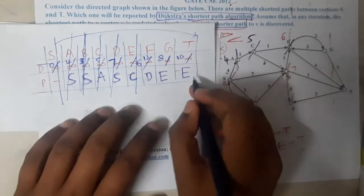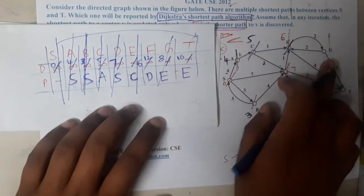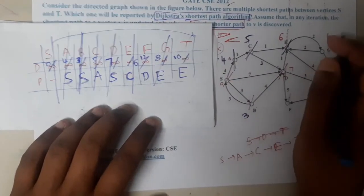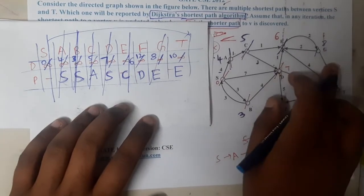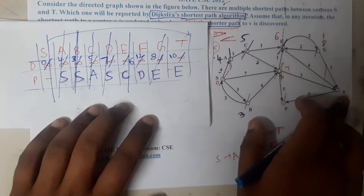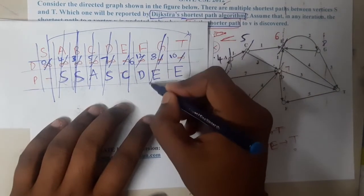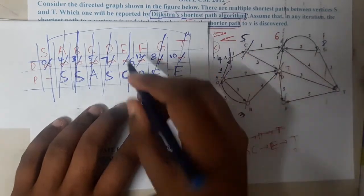The next minimum is g with distance 8. From g, we can go to t at cost 8+3=11. Since t already has distance 10, which is less than 11, there is no update. Node g is done.